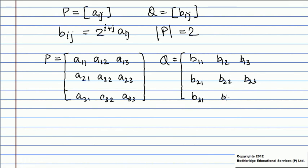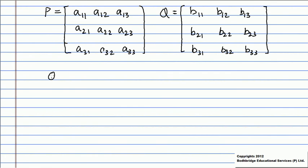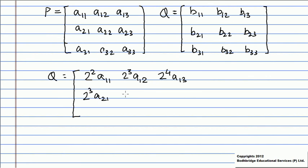Q can be written as a matrix whose terms are: 2² a11, 2³ a12, 2⁴ a13, 2³ a21, 2⁴ a22, 2⁵ a23, 2⁴ a31, 2⁵ a32, and 2⁶ a33.